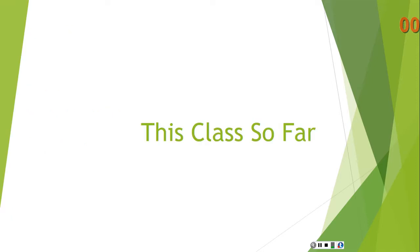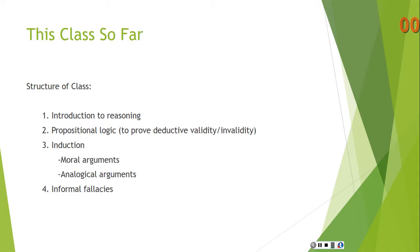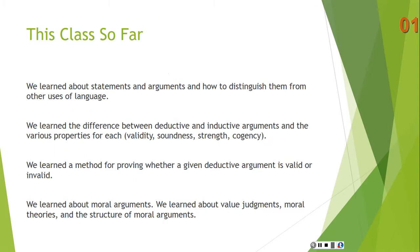So what have we learned in this class so far? Here's the structure of our class. In the first section I introduced you to reasoning. The second section we looked at propositional logic to prove that for a given argument it was either valid or invalid. Then we looked at induction more closely, and we looked at two kinds of arguments: moral arguments and analogical arguments. Finally we're going to look at informal fallacies.